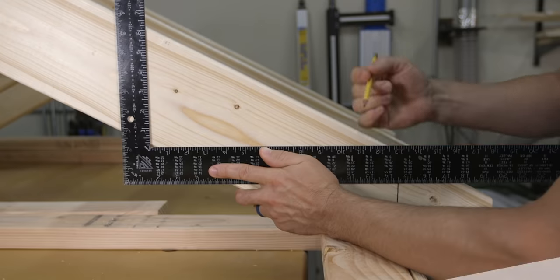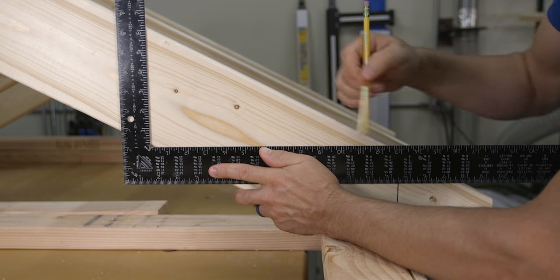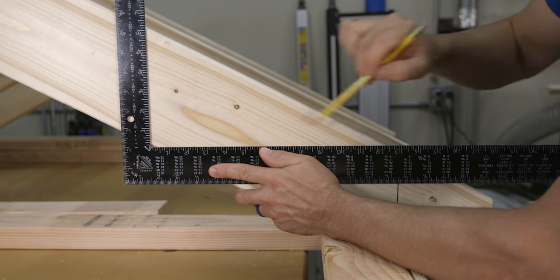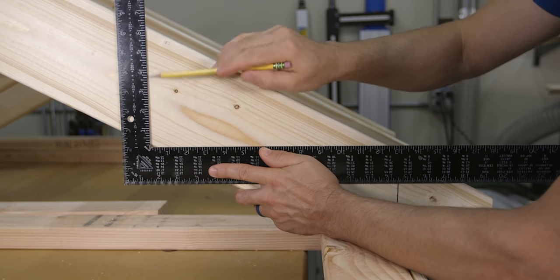Pitch is how much the roof rises per 12 inches of run. For example for every 12 inches of horizontal run our roof rises six inches. This number is completely dependent on personal preference, codes, or specified by a designer.